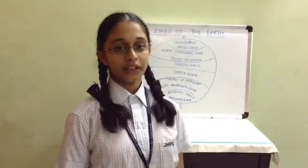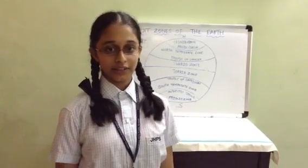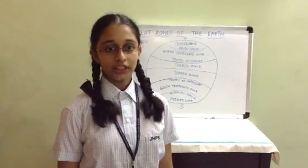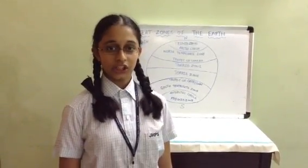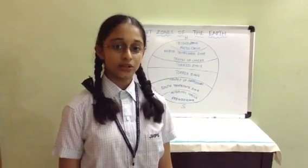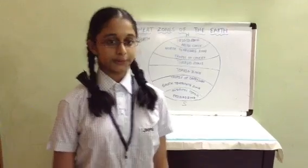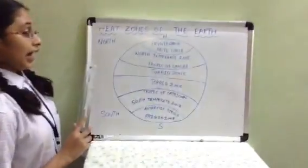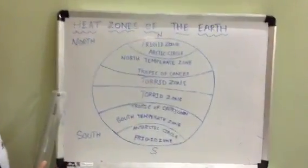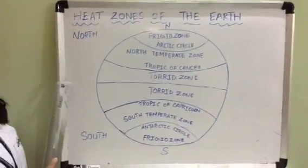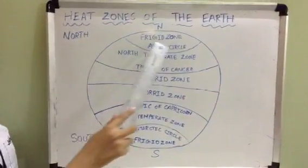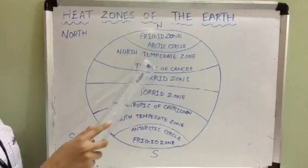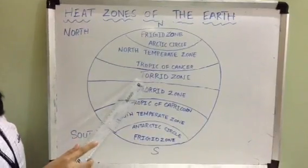Good morning everyone, I am Pranati of class 7C. Today I am going to tell you about the heat zones of the earth. As we know, the earth is divided into different zones: frigid zone, temperate zone, and torrid zone.